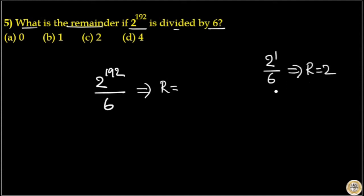Here 2 raised to 1 by 6, the remainder is 2 itself. 2 by 6, 2 is the remainder. Again, 2 raised to 2 by 6 implies this is 4 by 6, that means the remainder is 4.